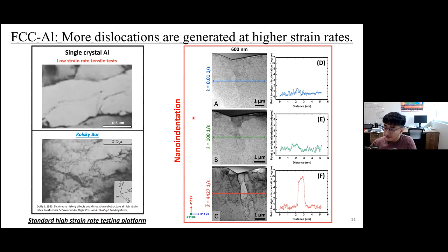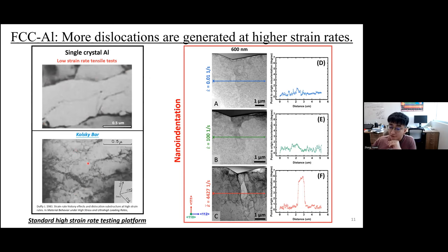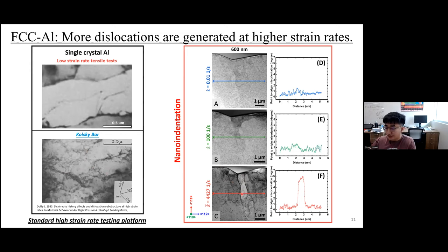As comparison with the standard high strain rate testing platform on single crystal aluminum: at lower strain rates, dislocation cell structures begin to form. For the same sample deformed at higher strain rate by a Kolsky bar, we find more dislocation generation — similar to what we find in high strain rate nanoindentation. The only difference is that we observe cell structure formation in nanoindentation, but not in Kolsky bar testing, which is probably related to the different boundary conditions between our testing platform and the standard platform.